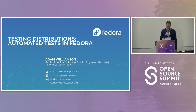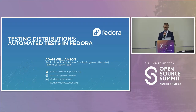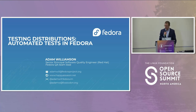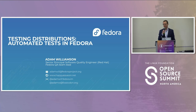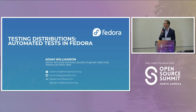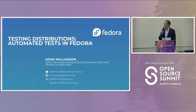All right, folks, I guess we can get started. It's nearly the top of the hour. So thanks y'all for coming. I'm Adam Williamson, a senior principal software quality engineer, which means I test stuff. They keep making the job titles more and more fancy. I've been at Red Hat since 2009, always working on QA, so I've seen the evolution I'm going to talk about — from very basic manual testing all the way up to what we do right now.